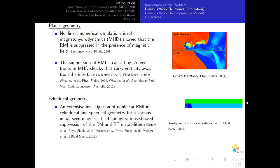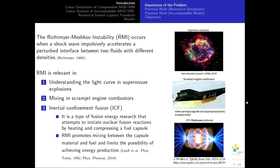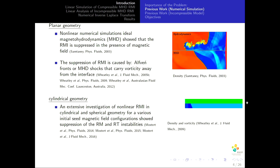Previous work in numerical simulation shows that in planar geometry, the presence of a magnetic field will inhibit the instability. The suppression of RMI is caused by Alfvén fronts or MHD shocks that carry the vorticity away from the interface. In cylindrical geometry, there is extensive study in nonlinear RMI in cylindrical and spherical geometry for various initial magnetic field configurations, also showing suppression of RMI and RT instabilities in the presence of a magnetic field. This movie shows the MHD shocks that split across the interface and remove the vorticity from the interface.